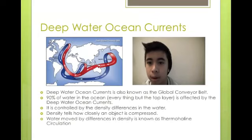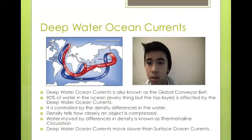Water moved by differences in density is also known as thermal haline circulation. Deep water ocean currents move slower than surface ocean currents.